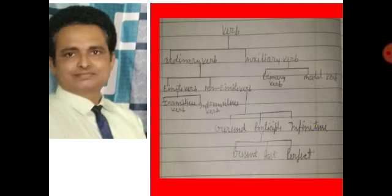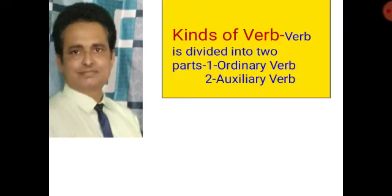Participle is also divided into three parts: number one, present participle; number two, past participle; and number three, perfect participle. Auxiliary verb is divided into two parts: number one, primary verb, and number two, modal verb. Ordinary verb is also known as main verb.